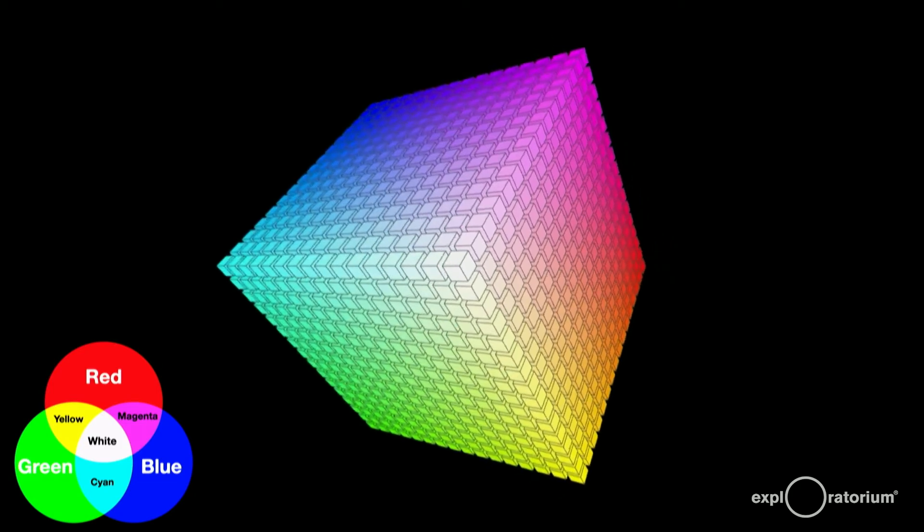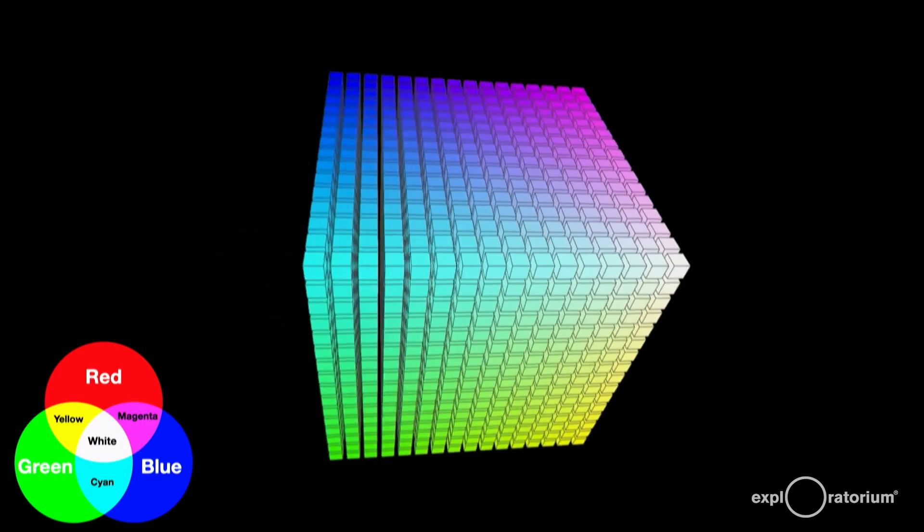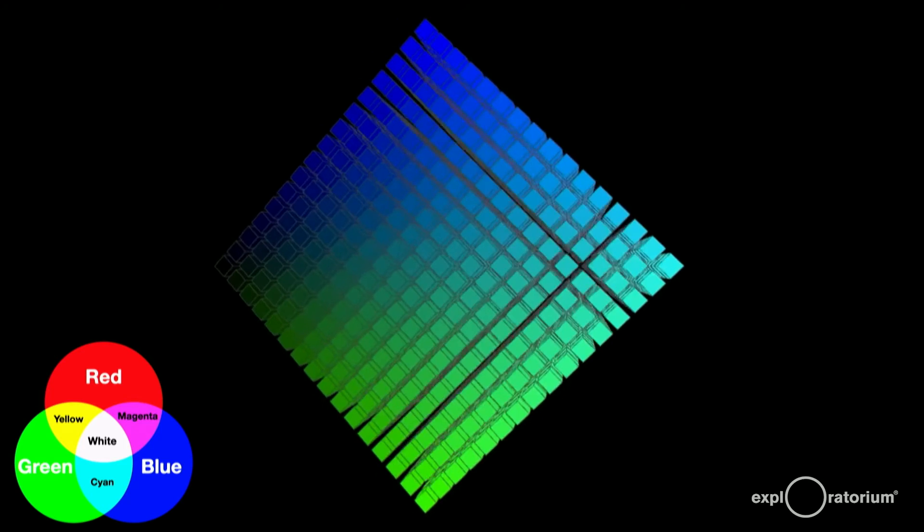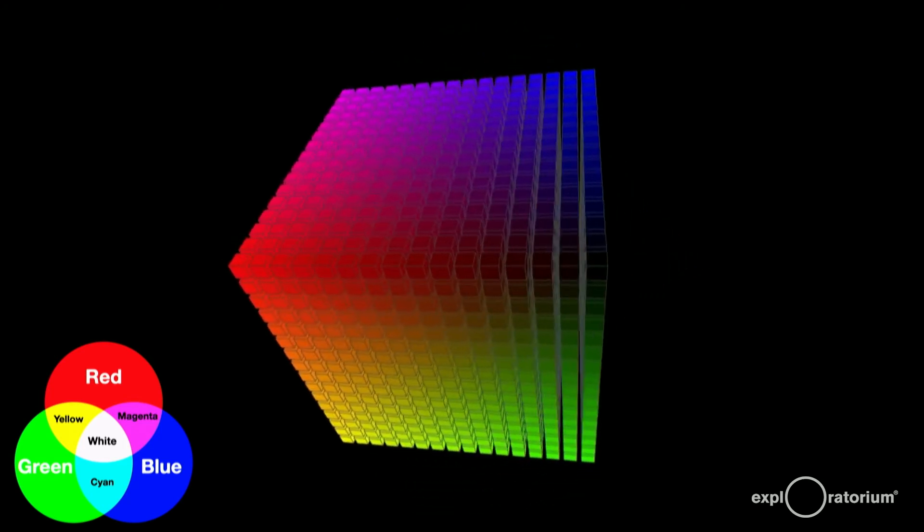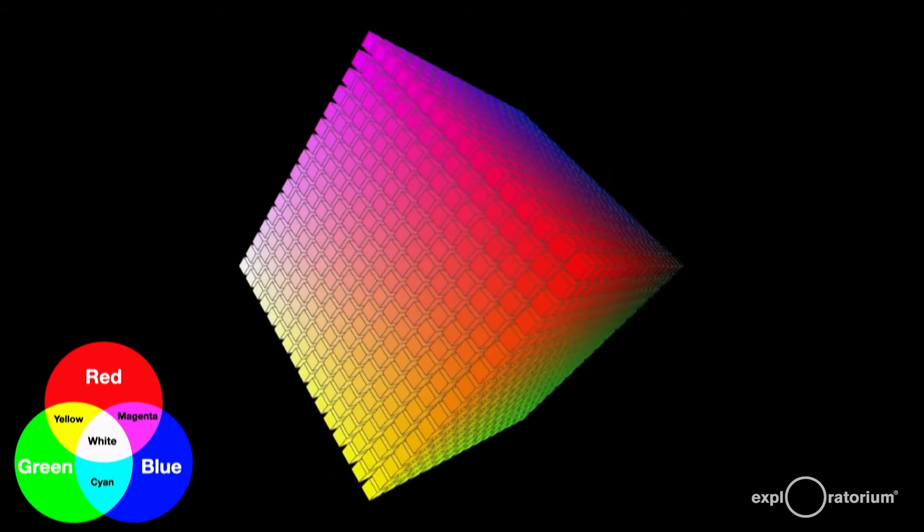Diagonally opposite corners of the cube are complementary. Red is diagonally opposite its complement, cyan. Green is opposite its complement, magenta. And blue is opposite yellow. Also, white and black are diagonally opposite each other.